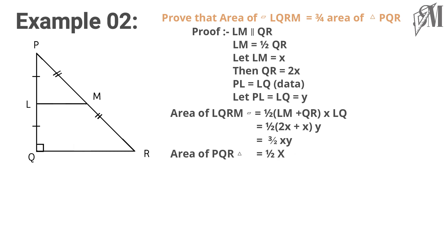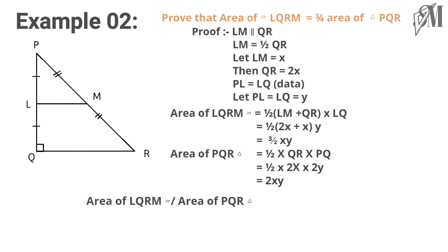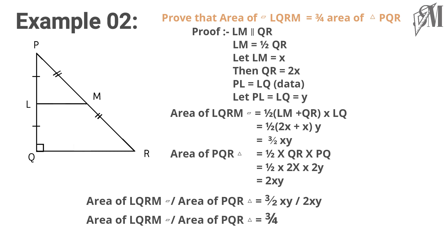Now let's see the area of triangle PQR. That is half into base into height. It is equal to half into 2x into 2y, which gives 2xy. Since we need to relate the areas, I divide the area of quadrilateral LQRM by the area of triangle PQR. Then I get 3xy/2 divided by 2xy, and the answer becomes 3 over 4.